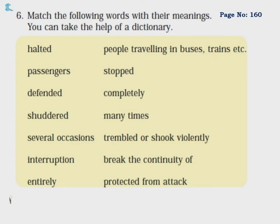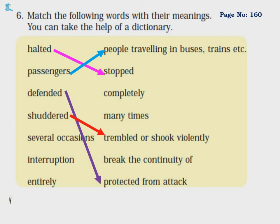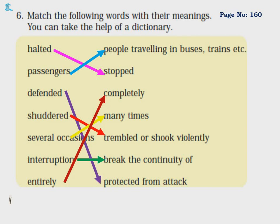Match the following words with their meanings: Halted means stopped. Passengers means people travelling in buses, trains, etc. Defended means protected from attack. Shuddered means trembled or shook violently. Several occasions means many times. Interruption means to break the continuity of something. Entirely means completely.